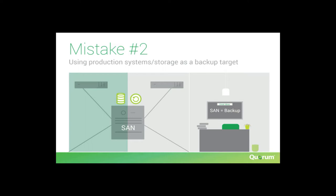One way to mitigate this mistake: go to your decision makers up front and say we need to do a better job architecting backup and recovery, and here is how much it will cost. Spec out a solution that shares nothing with production — no shared hypervisor, no shared storage, no shared network stack. It should be completely separate. That is mistake number two we must avoid.